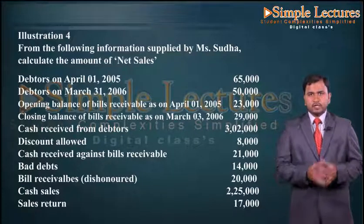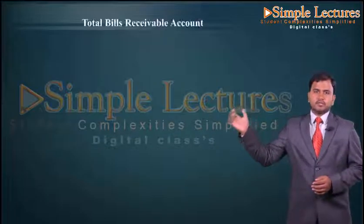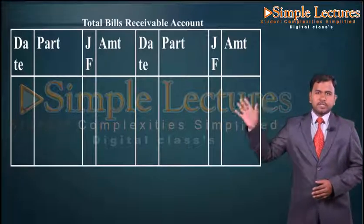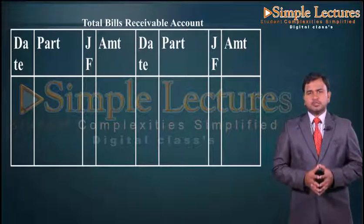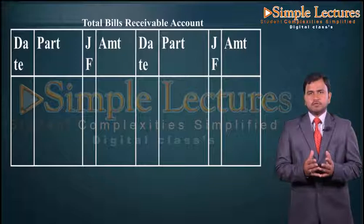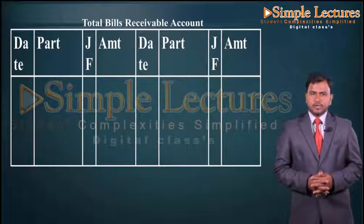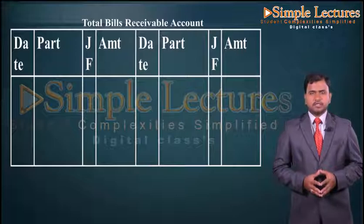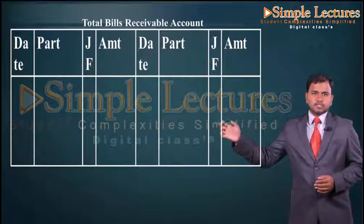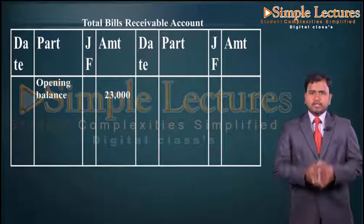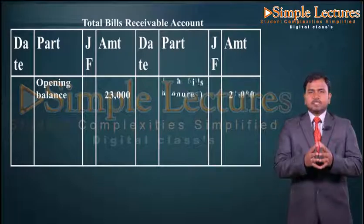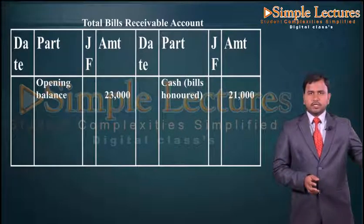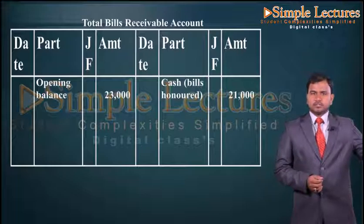By this information, first we have to prepare a total bills receivable account following the ledger account format. Bills receivable is an amount which we are supposed to receive, so it is an asset and the opening balance will be on the debit side. On the debit side we take the opening balance first: twenty three thousand. Then the cash received where bills were honored is recorded on the credit side: cash twenty one thousand.